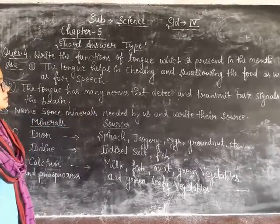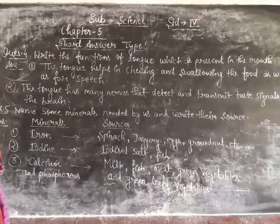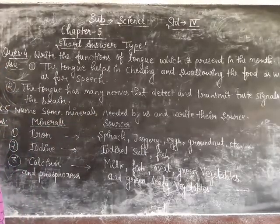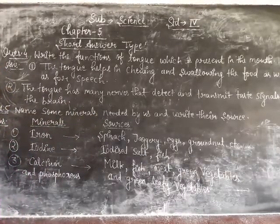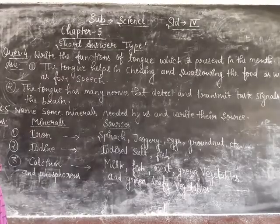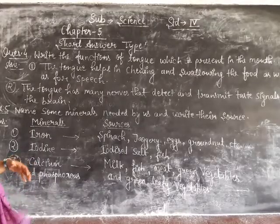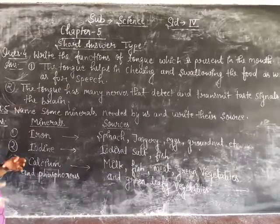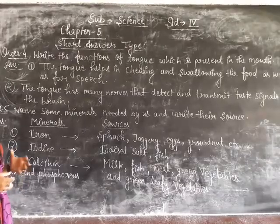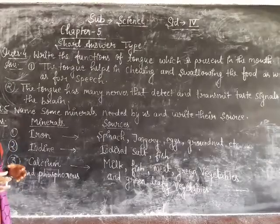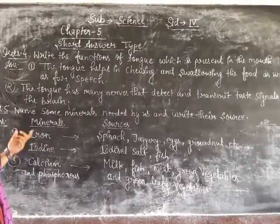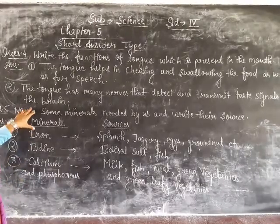The tongue has many nerves that detect and transmit taste signals to the brain. There are many nerves that detect the taste and transmit the signals to the brain.